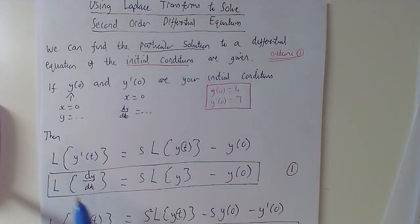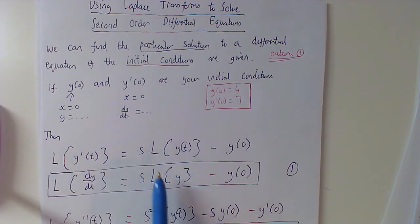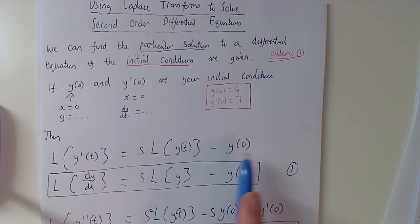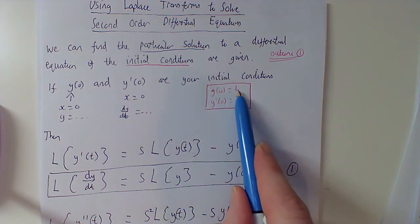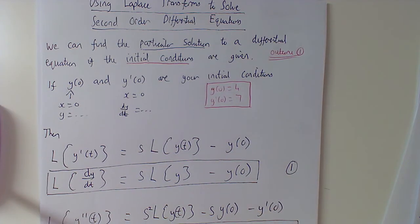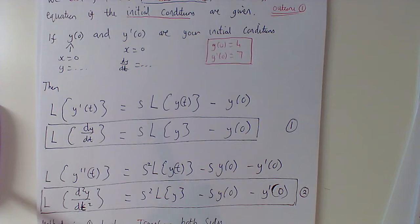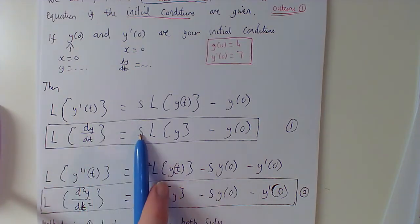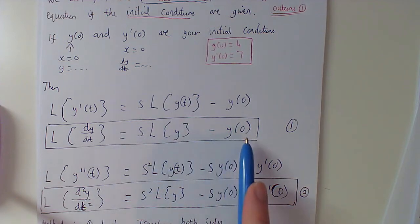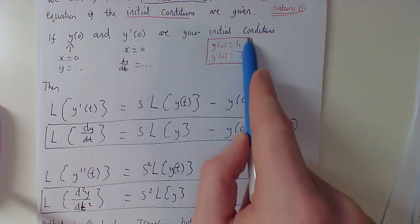Our two formulas: if we Laplace transform the first derivative, it becomes s times the Laplace transform of y, take away that first initial condition. So in this case, I'd put 4 in place of that. The Laplace transform of dy/dt is s multiplied by L{y}, take away your first initial condition — so again, you just put 4 in there.